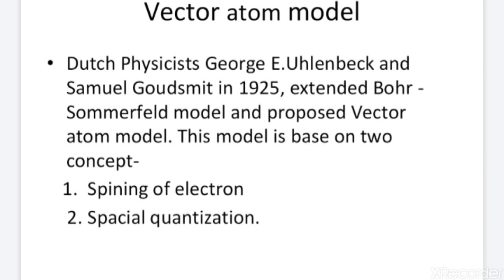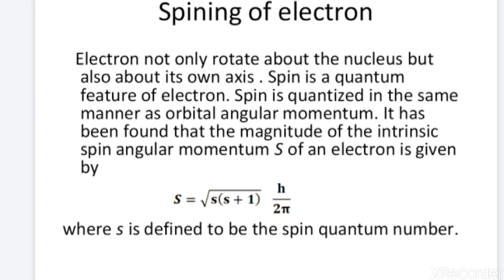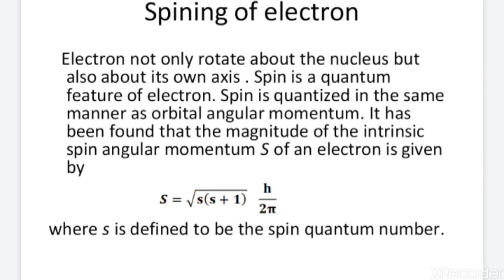To overcome these limitations, Uhlenbeck and Goudsmit in 1925 proposed a new atomic model known as the Vector Atom Model. This model is based on two concepts: first, the spinning of the electron, and second, spatial quantization. Let us first start to explain the spin of the electron. In 1925, Uhlenbeck and Goudsmit introduced a new concept that electrons not only rotate about the nucleus but also about their own axis, known as the spinning of the electron.